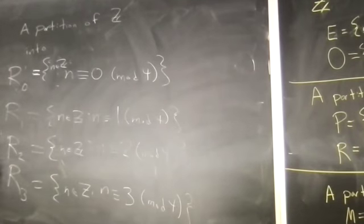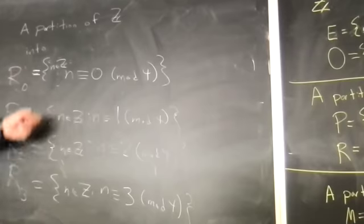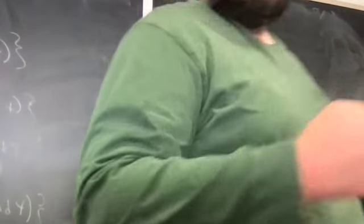And this is a partition of the integers based on what the remainder is when you divide by four. When you divide a number by four, you're going to get only one remainder, and every number has a remainder when you divide by four. There's nothing that says things can't be infinite.